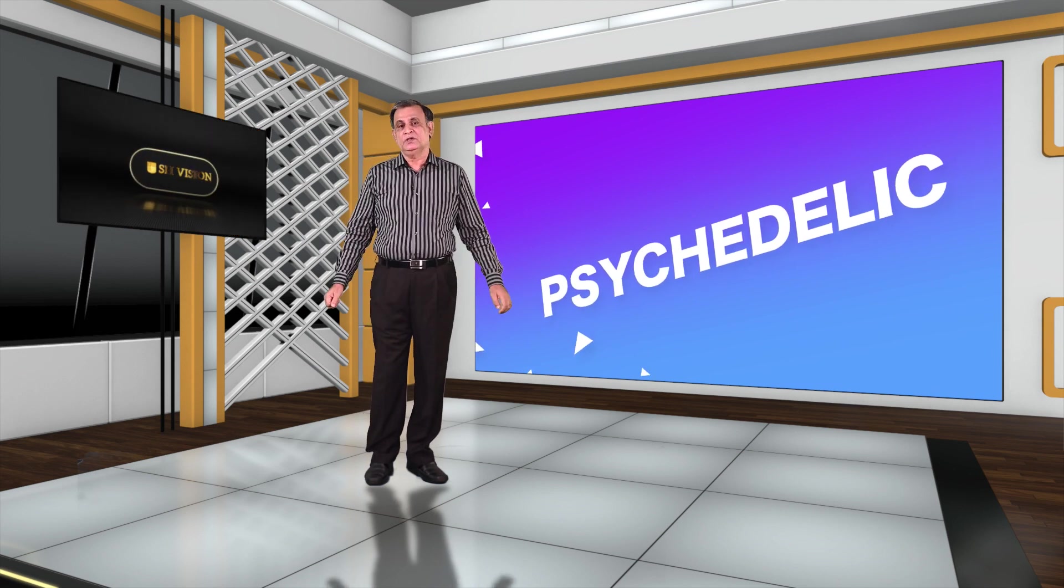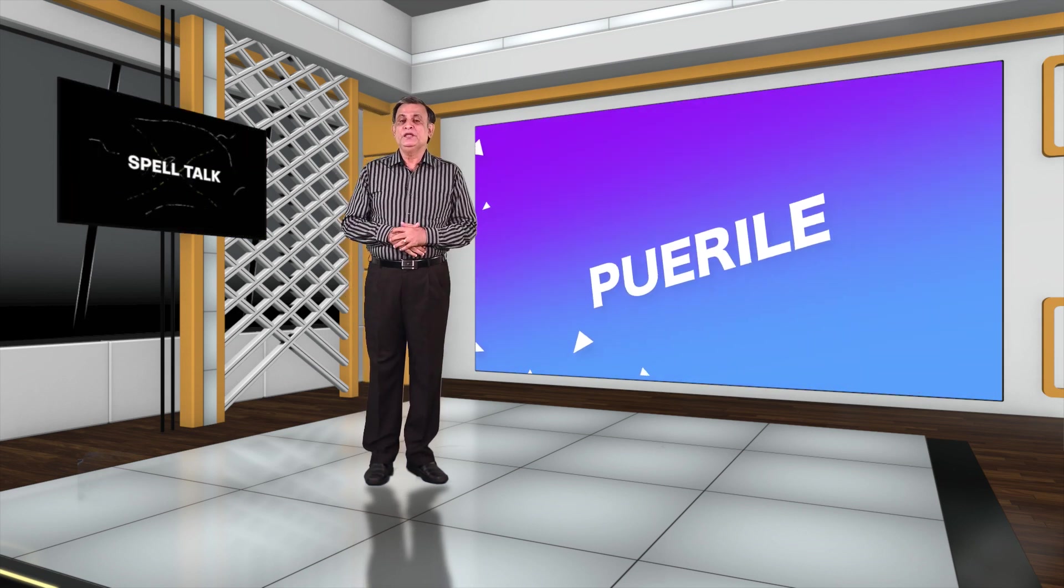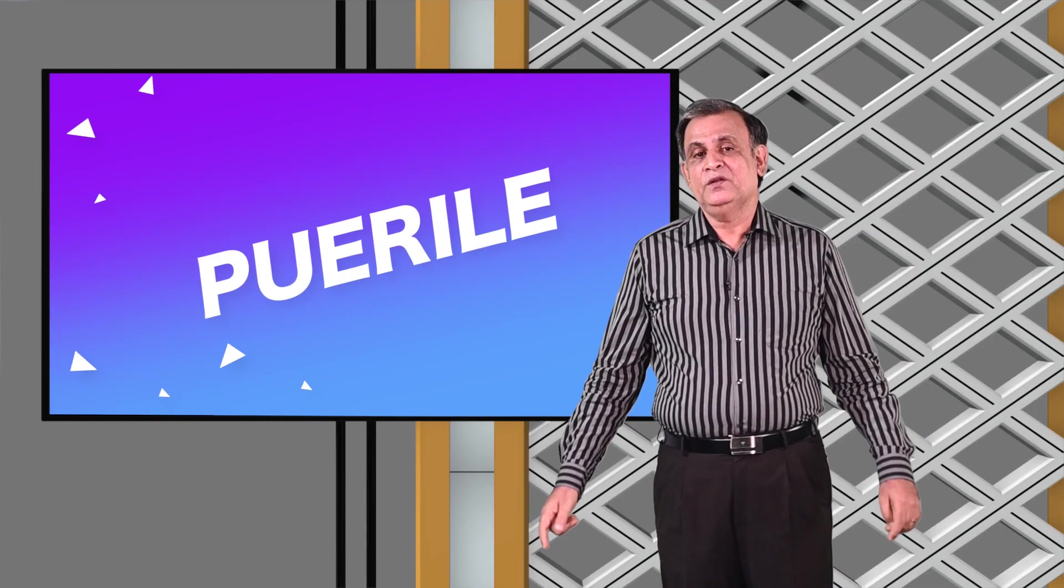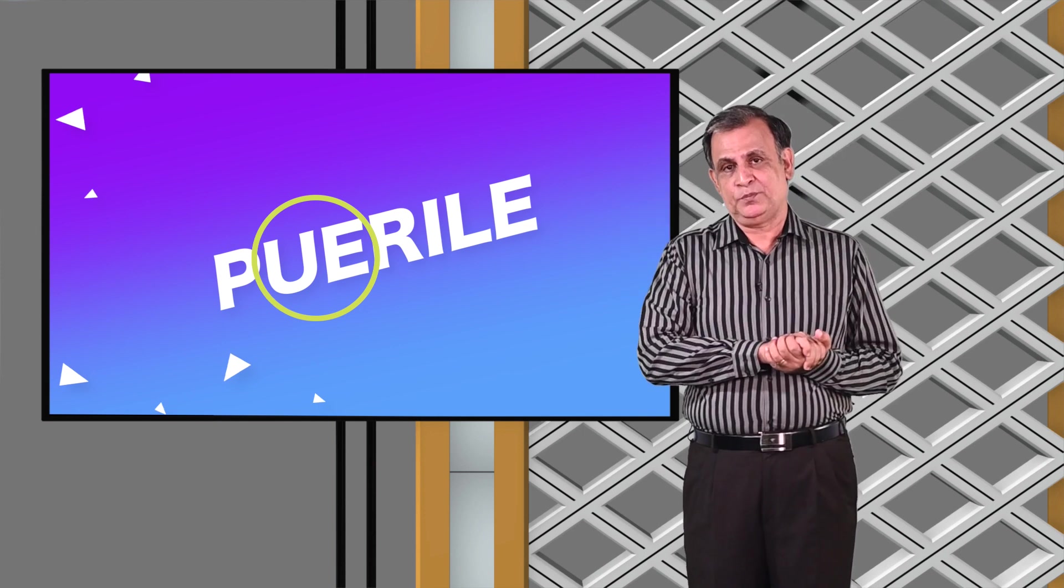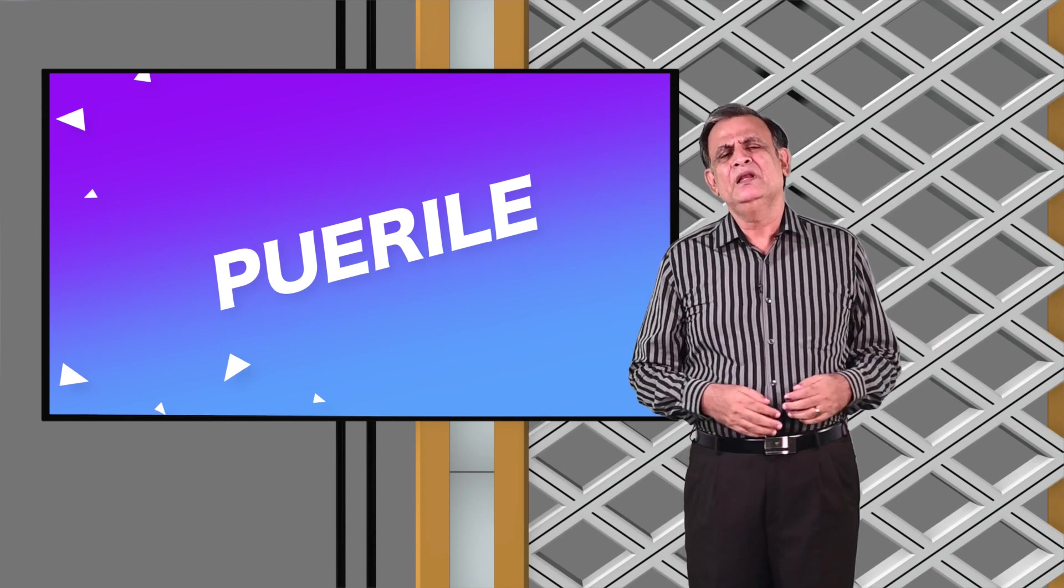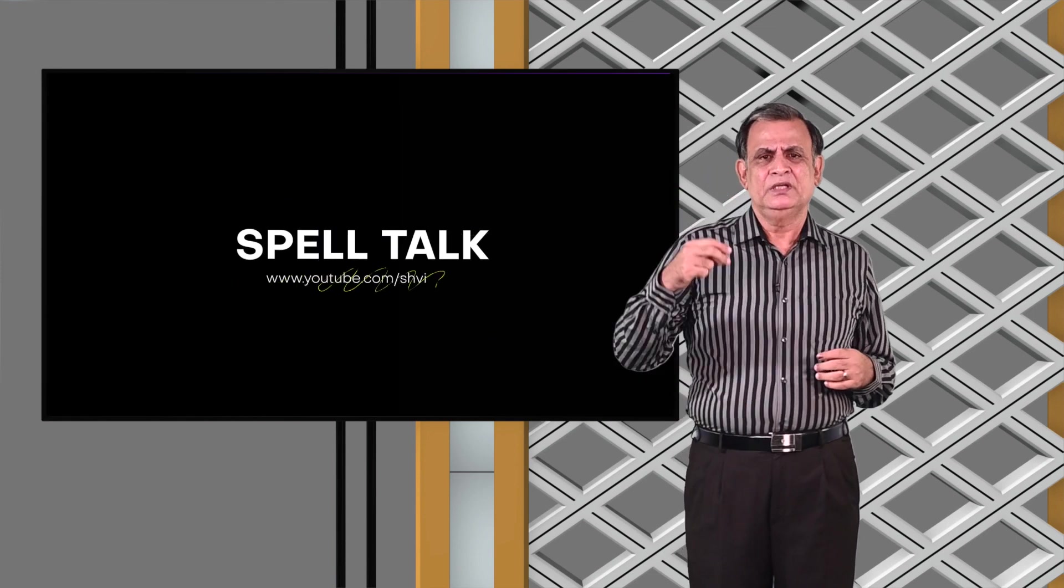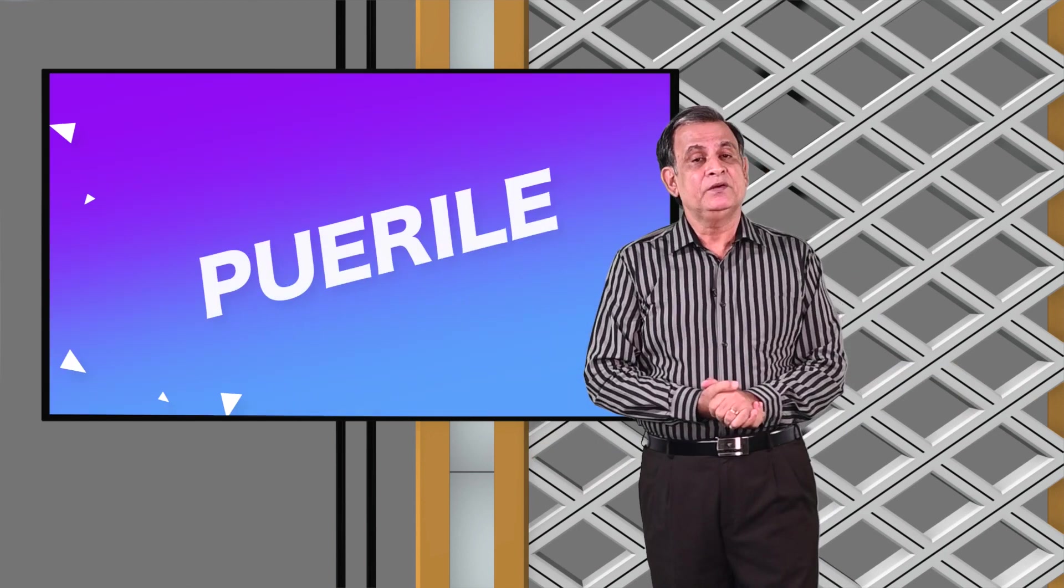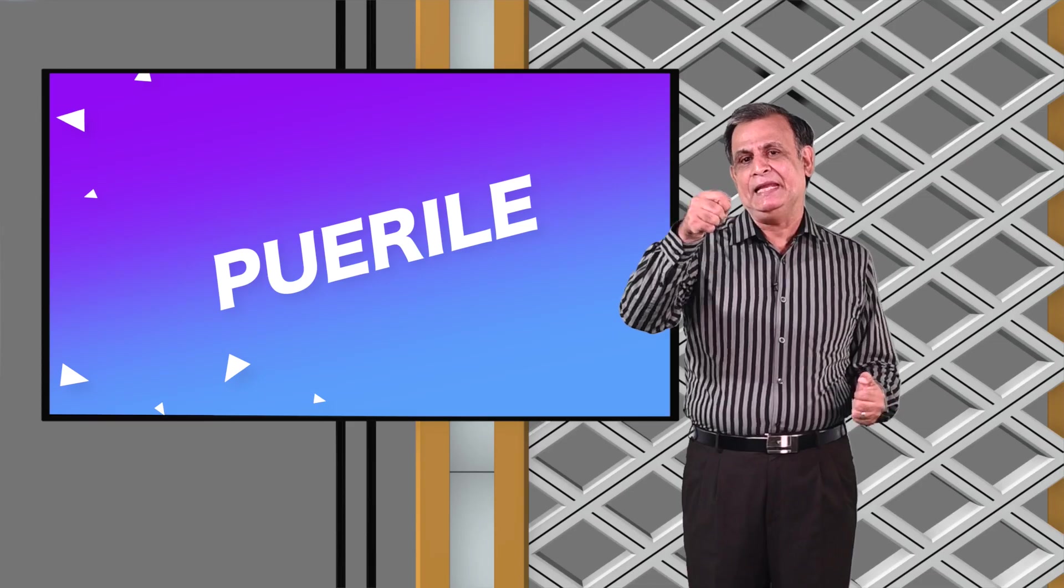Our next word is puerile. The spelling is P-U-E-R-I-L-E. The tricky area is the U-E after P. Puerile means childish, immature, silly, trivial.